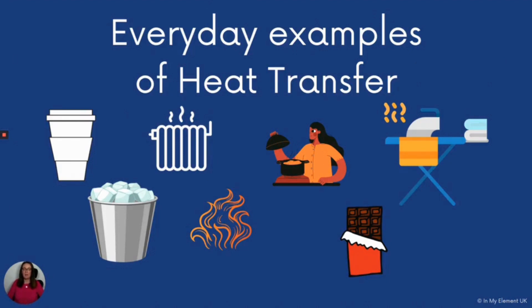Some everyday examples of conduction: if you hold a bar of chocolate in your hand on a warmer day, it will melt. Ironing clothes uses conduction — heat energy is transferred from the iron to the clothes and smooths out creases. A metal spoon used to stir sugar in tea will transfer heat and warm up. Ice will cool down in your hand by conduction. For radiation: heat from a fire will radiate and warm a room, heat from a radiator will also radiate, the sun warms your face on a summer's day, and a light bulb can also generate noticeable warmth.